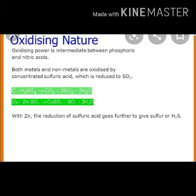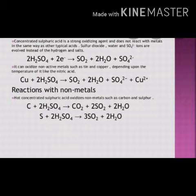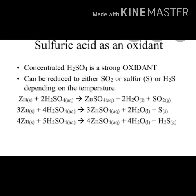When sulphur reacts with concentrated sulphuric acid, sulphur dioxide gas is formed, and concentrated H₂SO₄ is itself reduced to SO₂. That is: S + 2H₂SO₄ → 3SO₂ + 2H₂O.